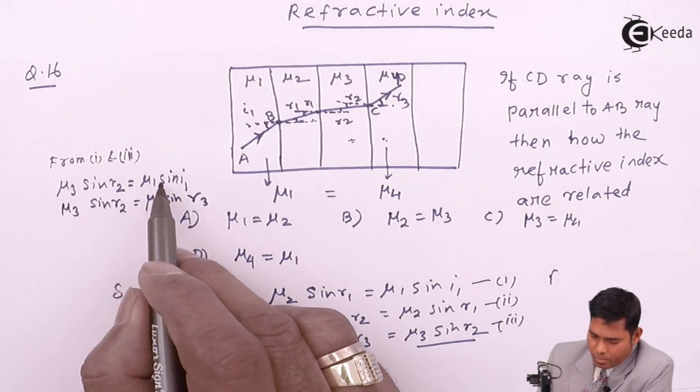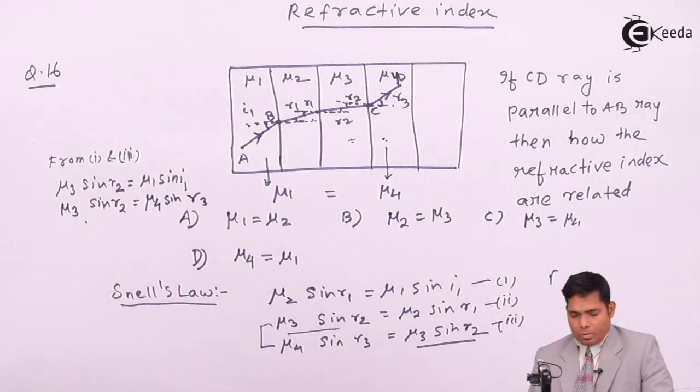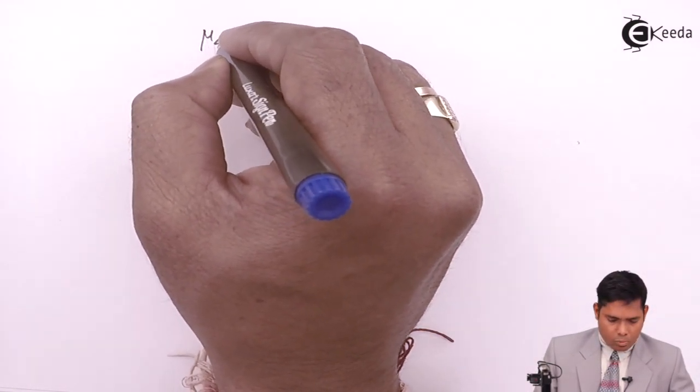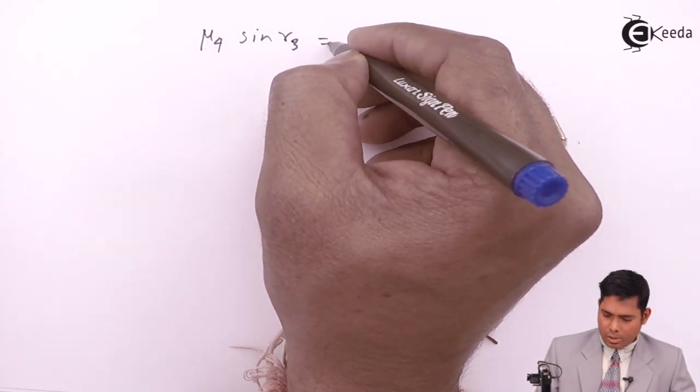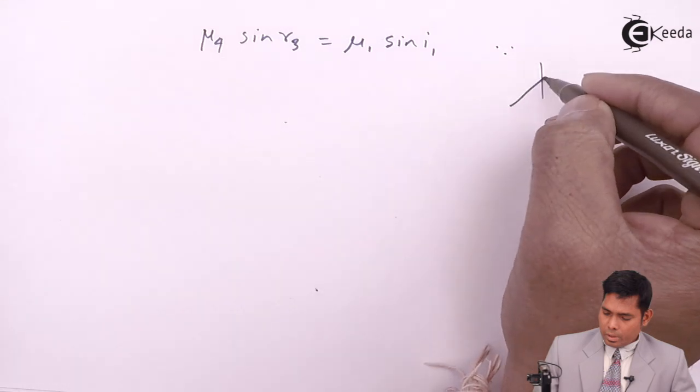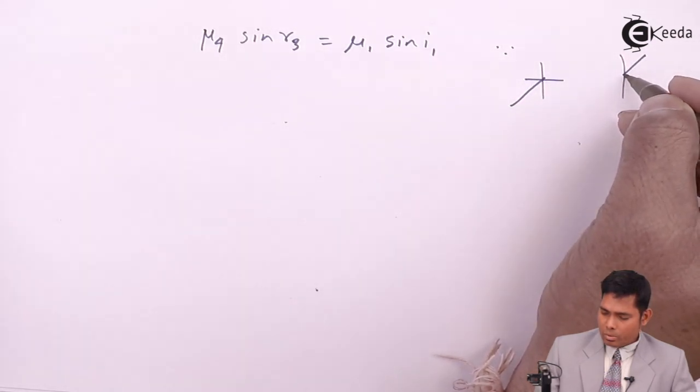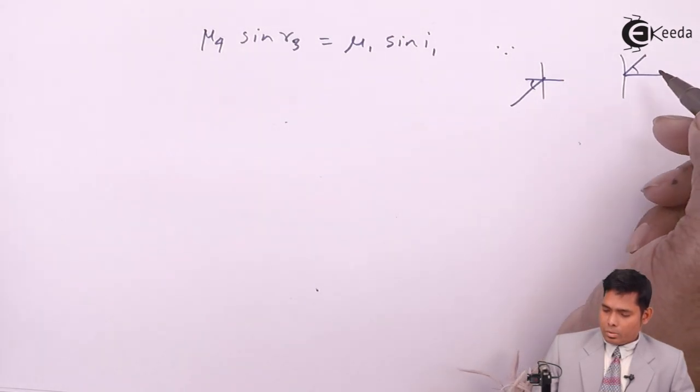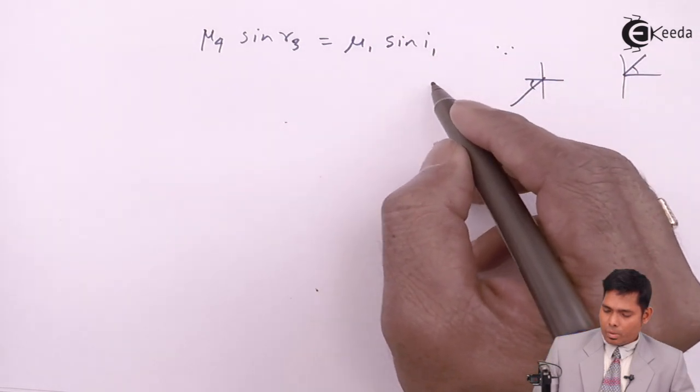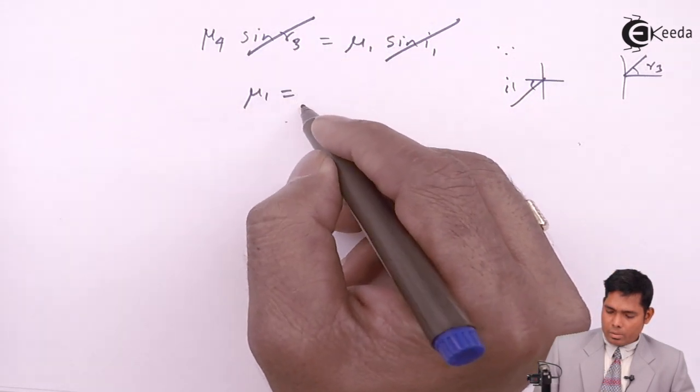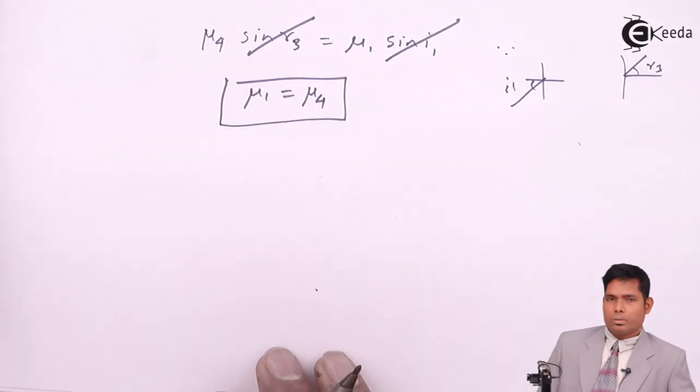If these two are same, then this will be same. From here, what we will get? From here, I will get mu4 sine r3 is mu1 sine i1. But, because the ray entering is parallel to the ray that is coming out, therefore, this angle and this angle will be same. So, these two angles will be same. So, i1 here and r3 here will be same. Then, this will cancel out and mu1 is mu4. This is the answer to this question.